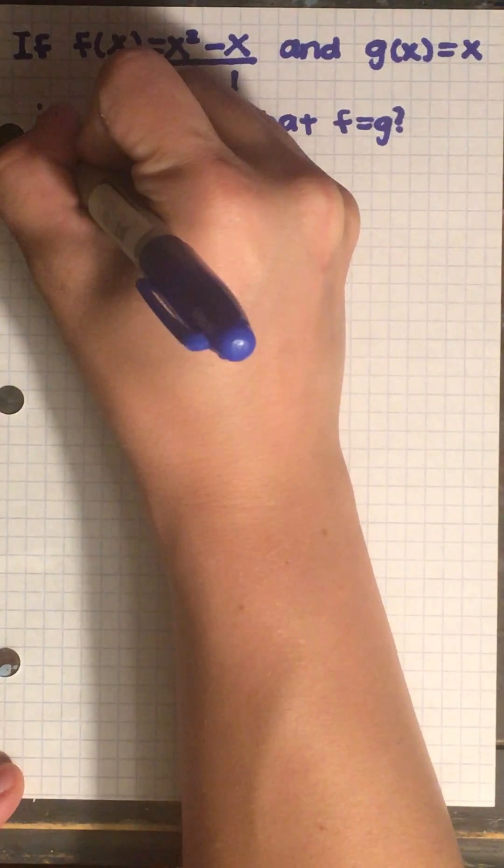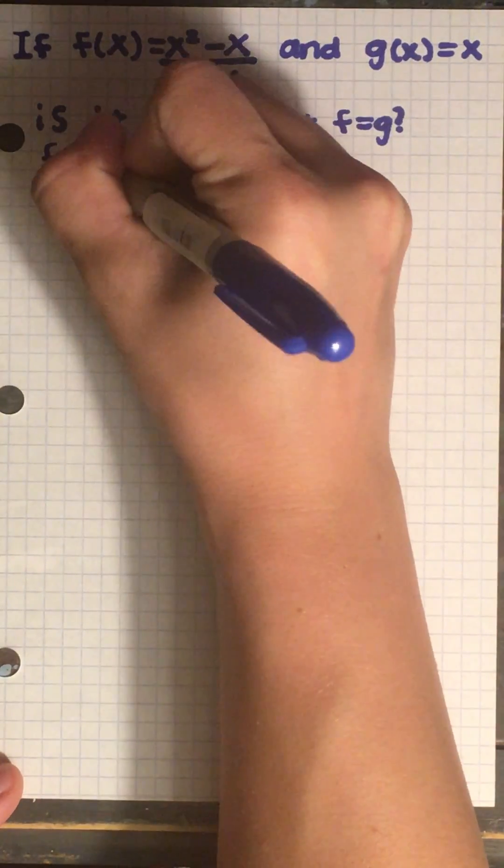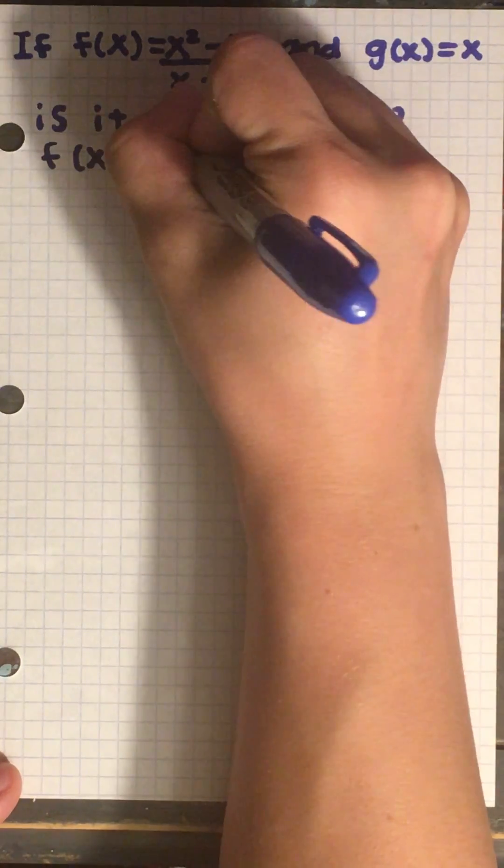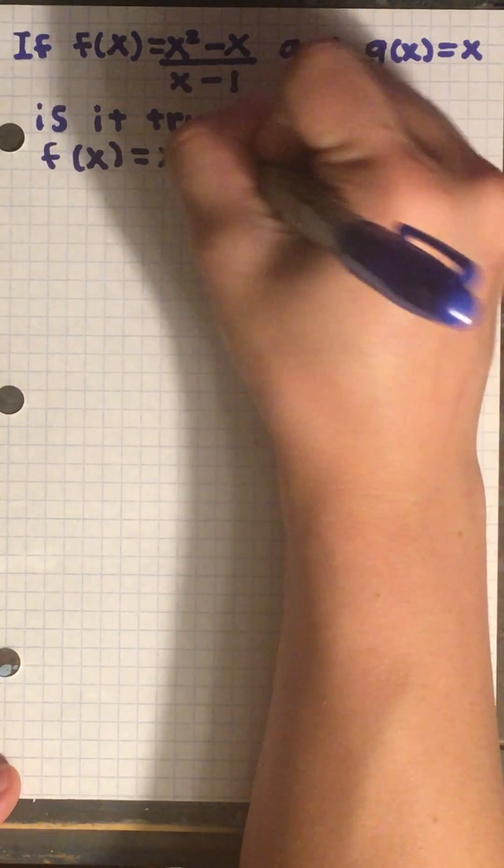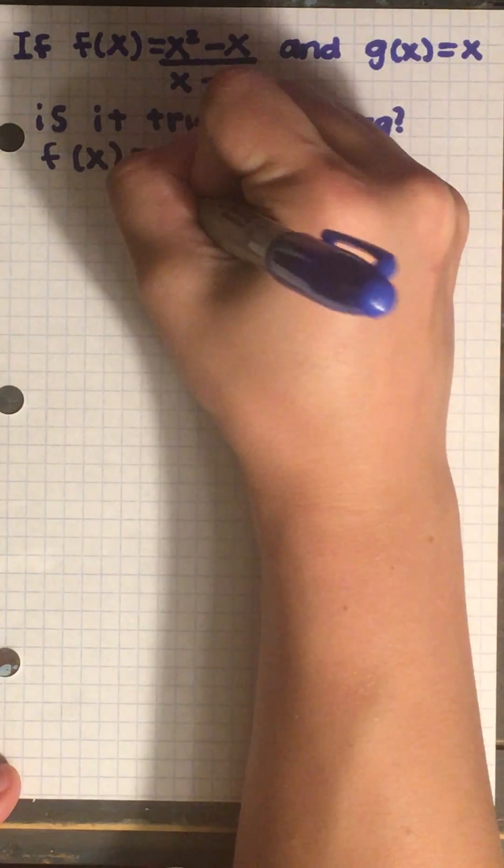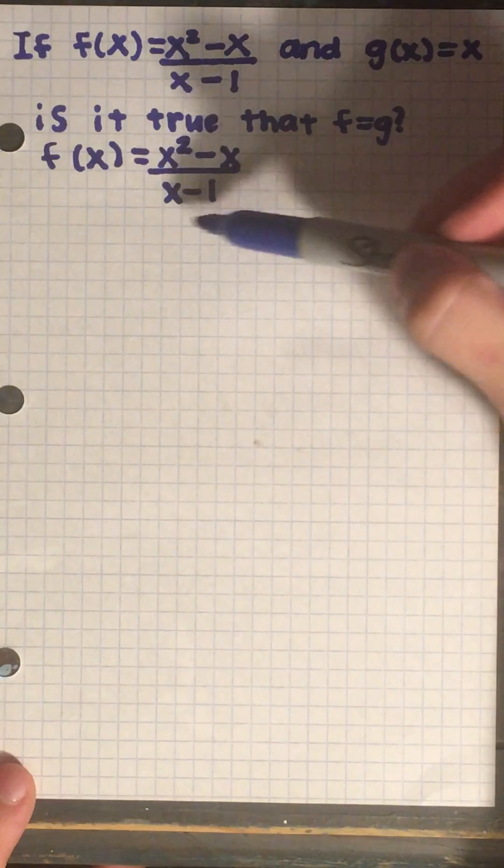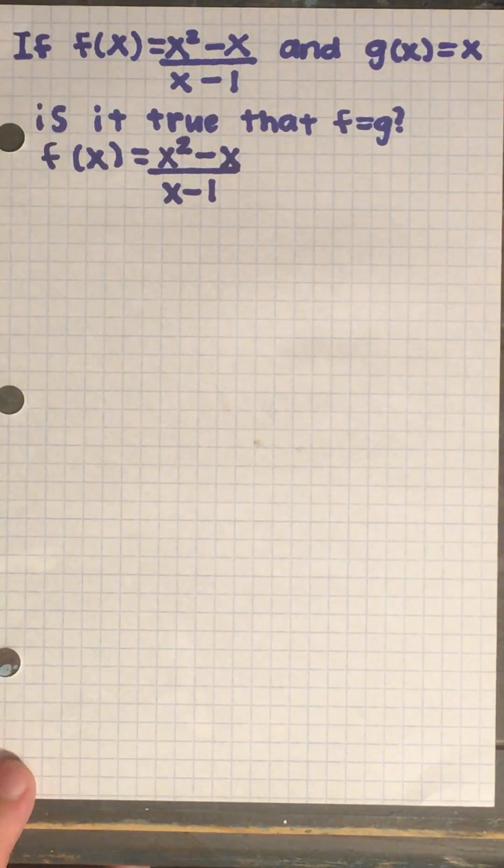First, we can simplify f of x two ways. We can either factor the top or divide the bottom into the top. What I'm going to do is factor the top.